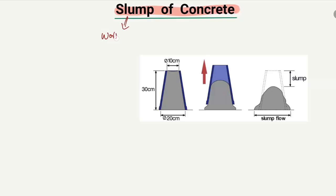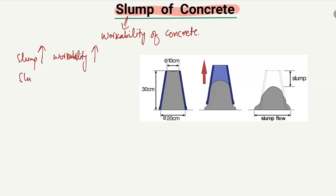Slump shows the workability of concrete — that is, how much the concrete is workable. If we have a higher slump value, it means that our concrete is more flowable and more workable, so the workability is higher. If our slump value is lower, it means the workability is lower. So slump describes how easy it is to work with the concrete.